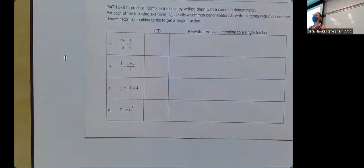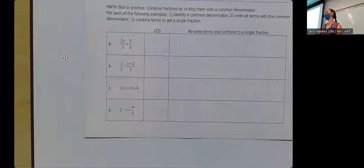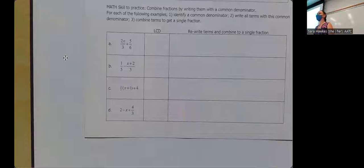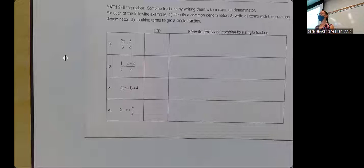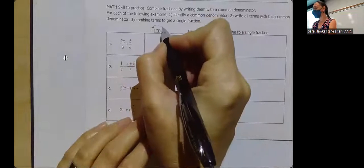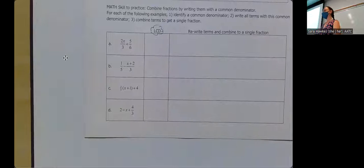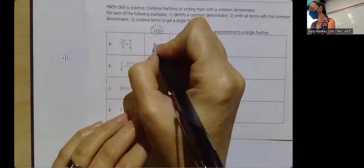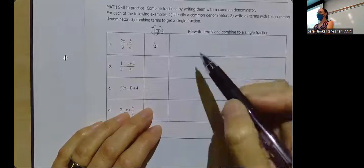LCD stands for the lowest common denominator. I don't actually care if you use the lowest common denominator — it generally means you'll be working with smaller numbers, but any common denominator will do. So when I look at the denominators of three and six, the lowest common denominator is six. Are there other denominators that would work? I could use 12, 18, or 24, but all of those mean I'm working with bigger numbers. That's usually why textbooks say you should choose the lowest common denominator, but it doesn't actually matter. So my lowest common denominator would be six.